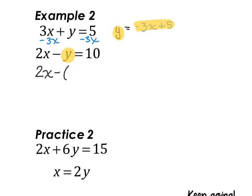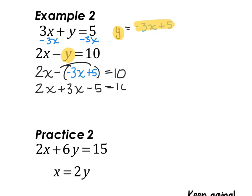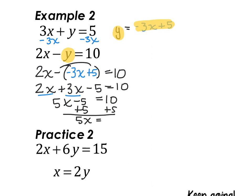Two x minus — putting this in parentheses — negative three x plus five, equals ten. This is where I'm substituting in the expression I highlighted. Notice the subtraction sign: you can see where you might make a sign mistake there. So I distribute the negative: I have two x plus three x minus five equals ten. Combine like terms — two x and three x gives five x minus five equals ten. Add five to both sides: five x equals fifteen, so x equals three.